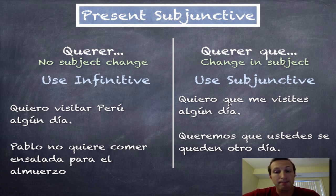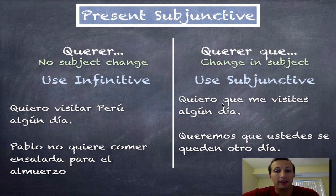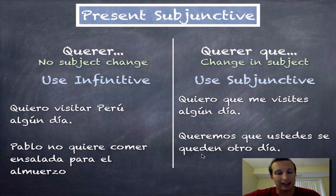You'll notice that most subjunctive uses have this special word 'que,' and this is no exception. 'Quiero que me visites algún día' — that word 'que' is almost always used for subjunctive. 'Queremos que' — again, another 'que' — 'ustedes se queden otro día.' And 'quedar' becomes 'queden' because it's subjunctive.